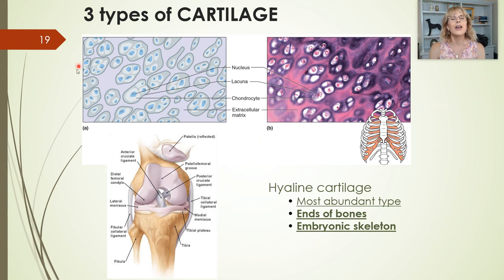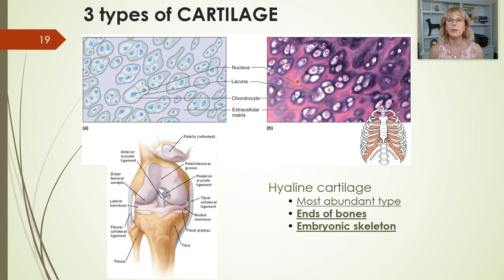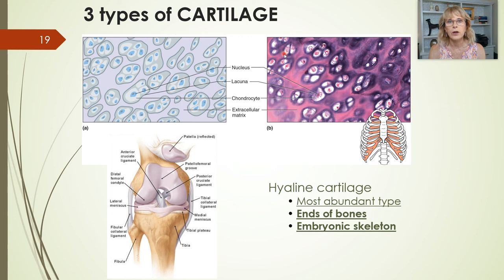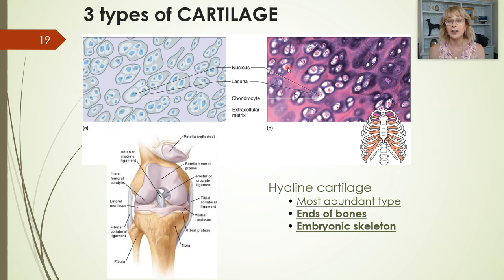Looking at hyaline cartilage through the microscope: the matrix is rigid, so cells need little hidey holes to live in. The rigid matrix stains purple and pink — there is another stain that makes it a beautiful blue. The matrix is not living tissue; the living part of cartilage are the chondrocytes inside the lacunae.